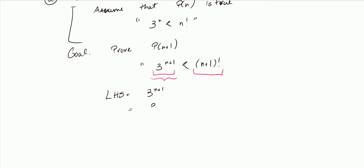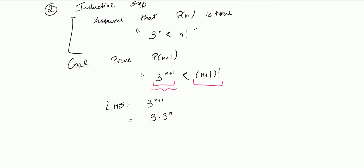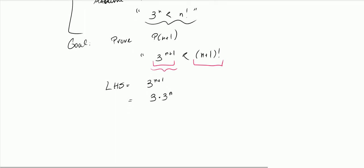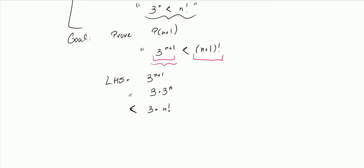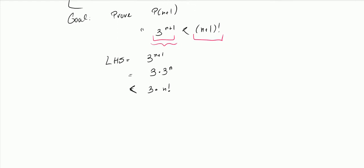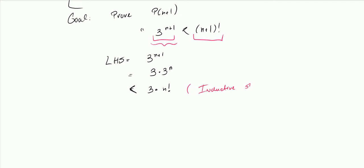We know that 3 to the n+1 is just equal to 3 times 3 to the n. Now I'll use my inductive hypothesis — the fact that 3 to the n is less than n factorial — so I put a less-than sign, not an equal sign: 3 times 3 to the n is less than 3 times n factorial. This is my inductive step.